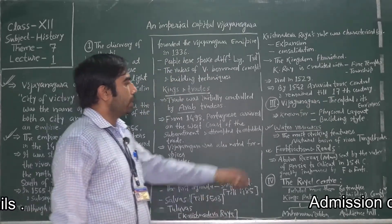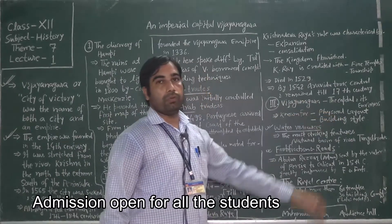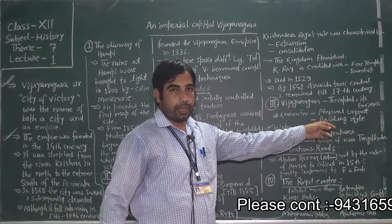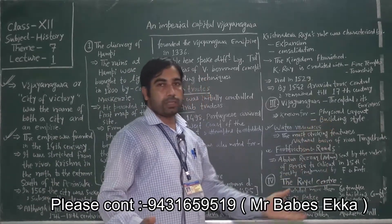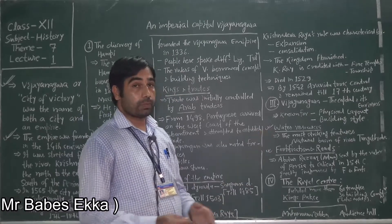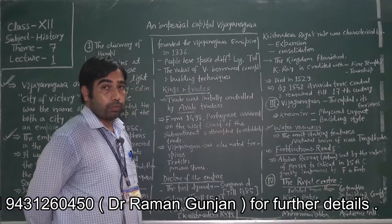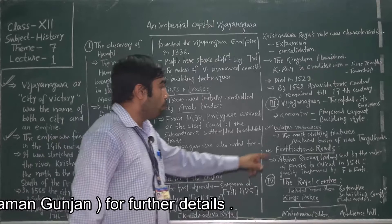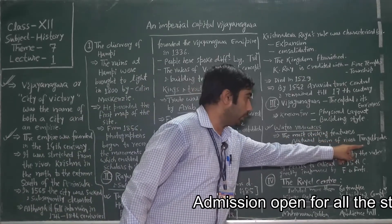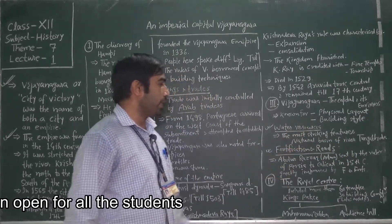Now, Vijayanagara — the capital and its environs. It is known for its physical layout, building styles, techniques, and monuments. Coming to water resources, especially the Tungabhadra river — very famous and important to keep in mind. The most striking feature is the natural basin of the river Tungabhadra. Water resources, fortification, and roads were all significant.